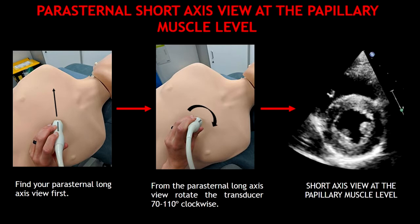The first view I'm going to show you is the parasternal short axis view at the papillary muscle level. You can obtain this view in two simple steps: first, find your parasternal long axis view, and then rotate the transducer clockwise and you're going to be able to get the parasternal short axis view at the papillary muscle level.